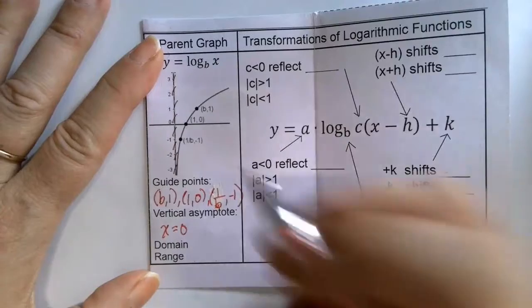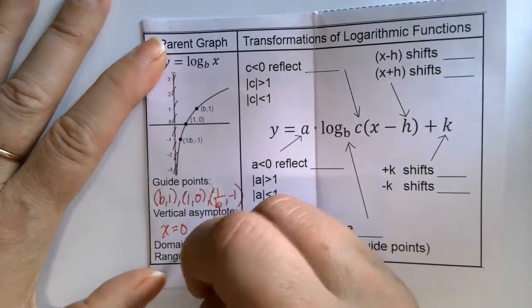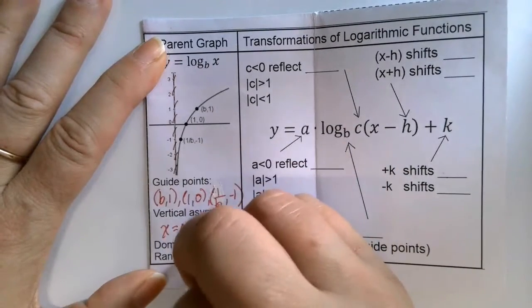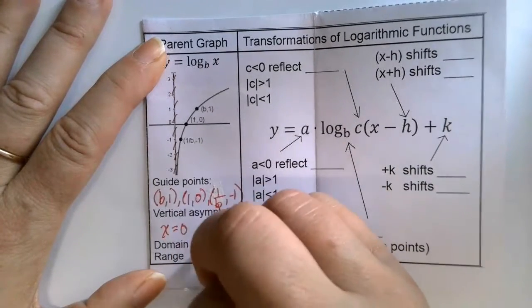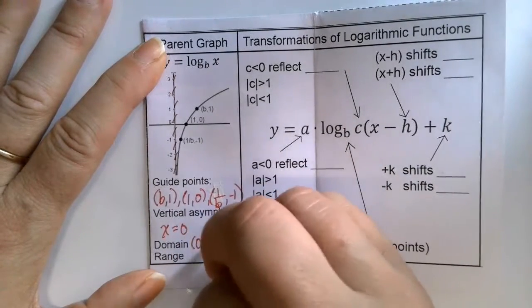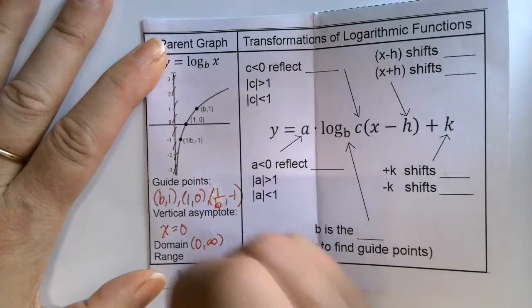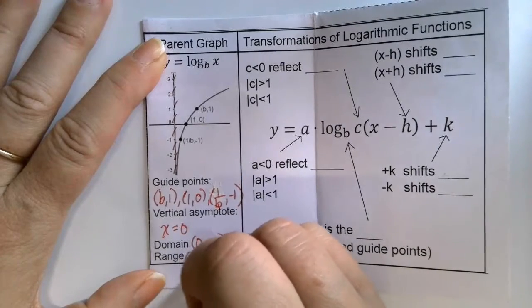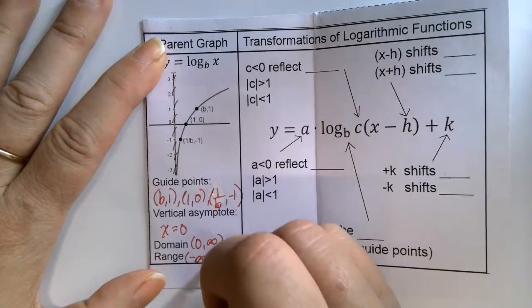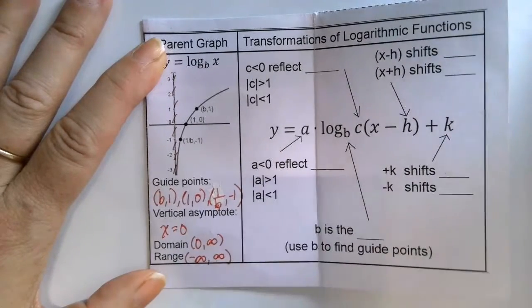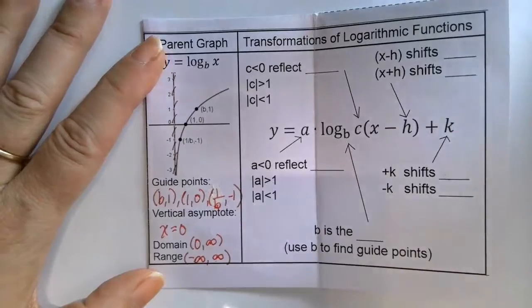The vertical asymptote for the parent graph is along the y-axis, so that's the equation x equals 0. The domain is half-bounded from 0 non-inclusive to positive infinity. The range is fully unbounded, negative infinity to positive infinity.